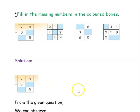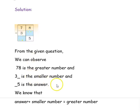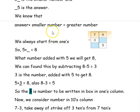The first question given is 78 minus 3-dash, and the answer is dash-5. So we have to fill in these blue boxes. From the given question, we observe that 78 is the greater number, 3-dash is the smaller number, and dash-5 is the answer. We know that if you add the answer with the lower number, you will get the biggest number. So with this concept, we will start finding the missing numbers.